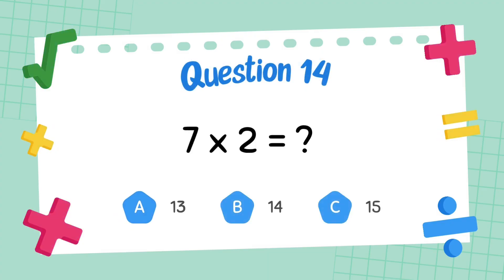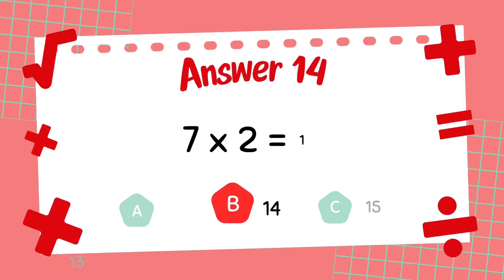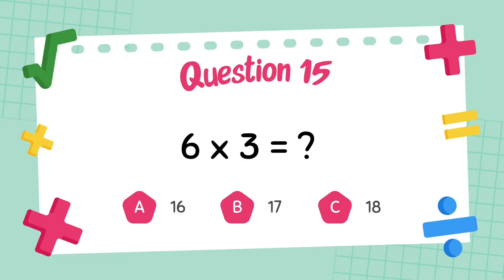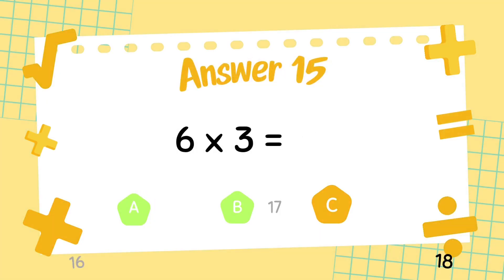What is 7 multiply 2? The answer is 14. The answer is 18. What is 6 multiply 3? The answer is 18.